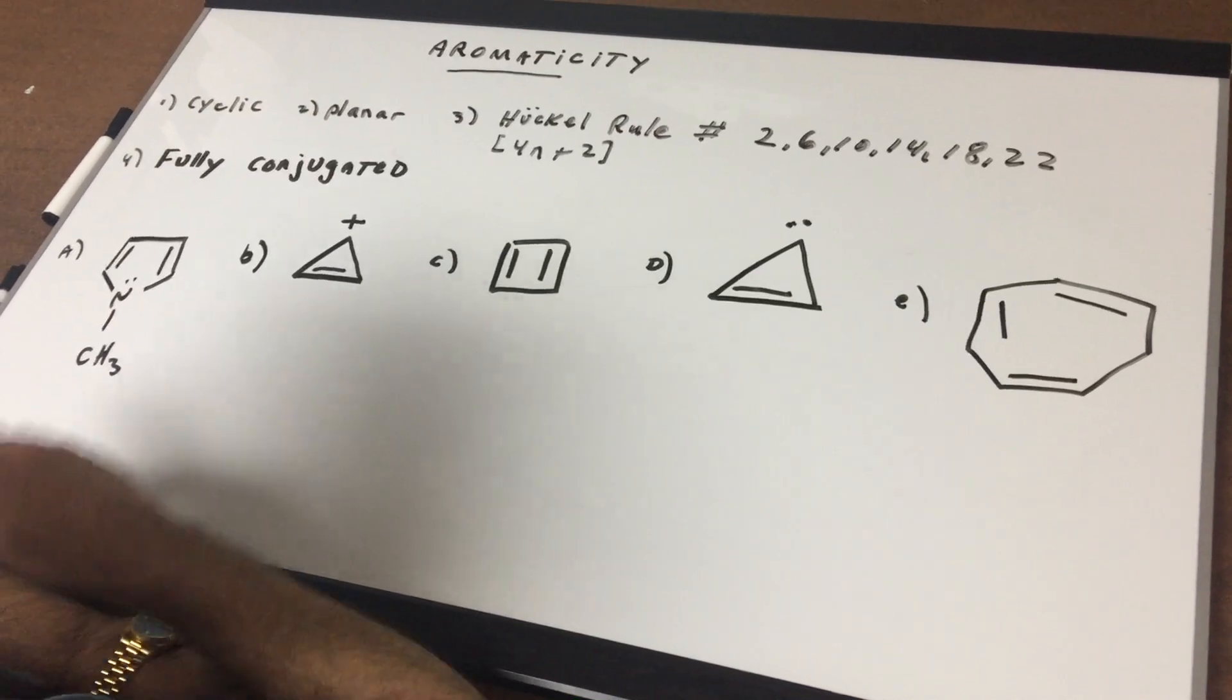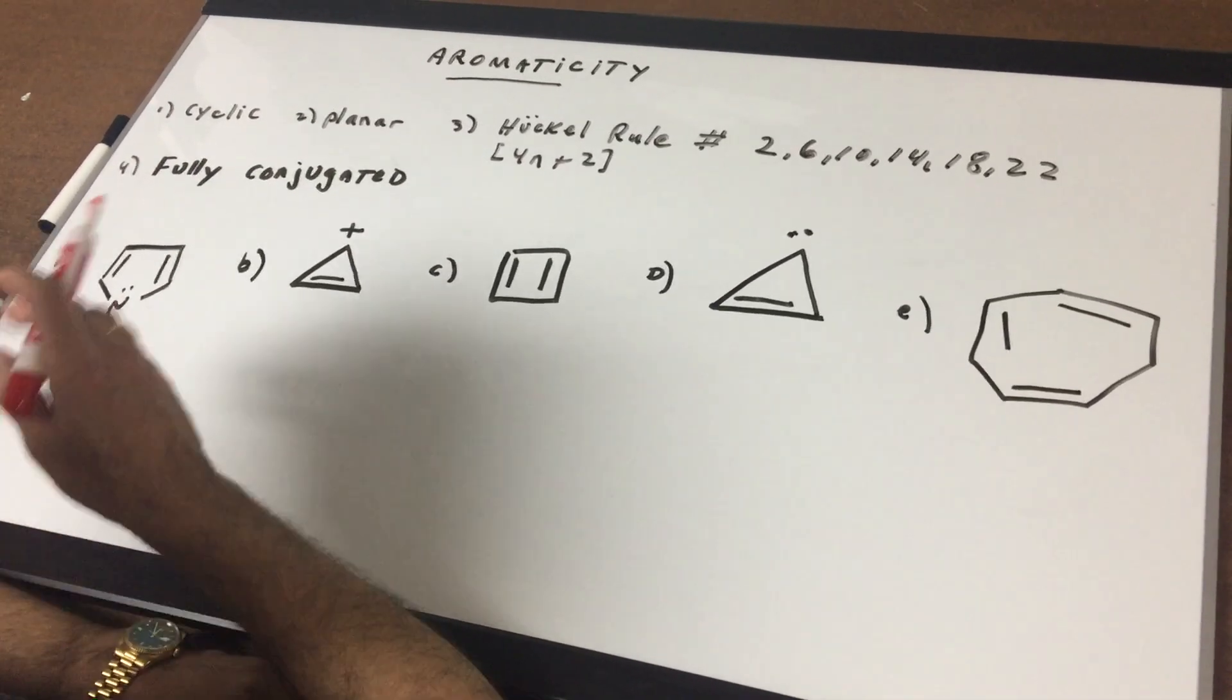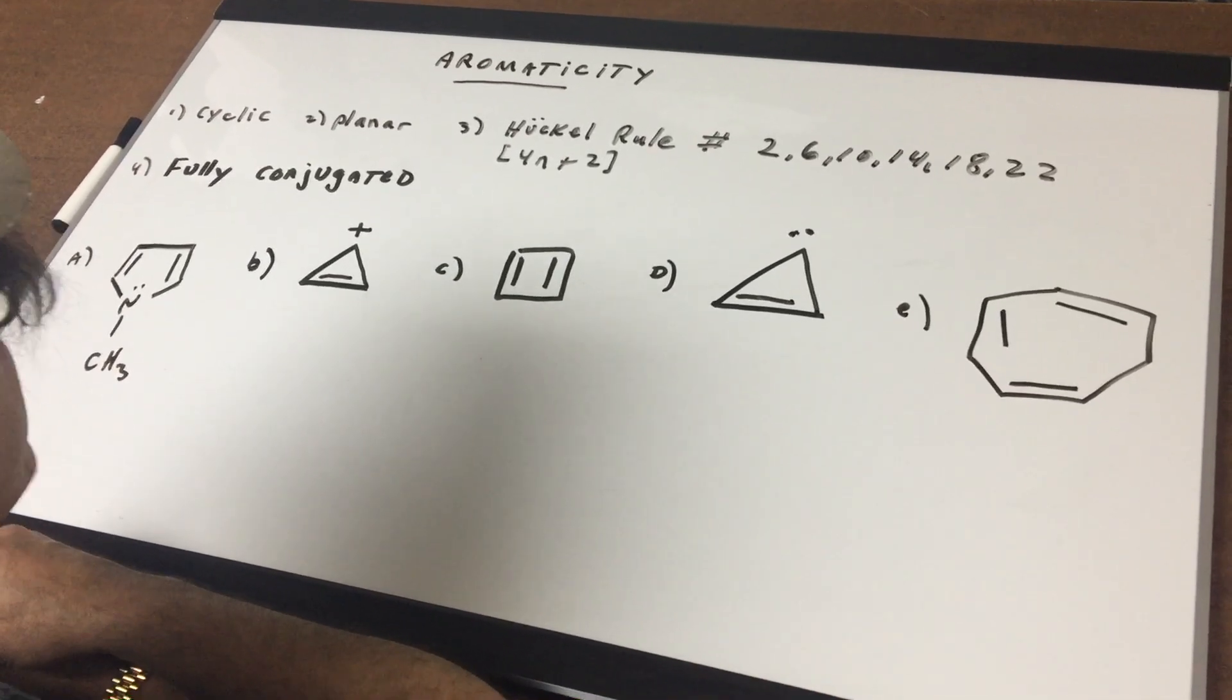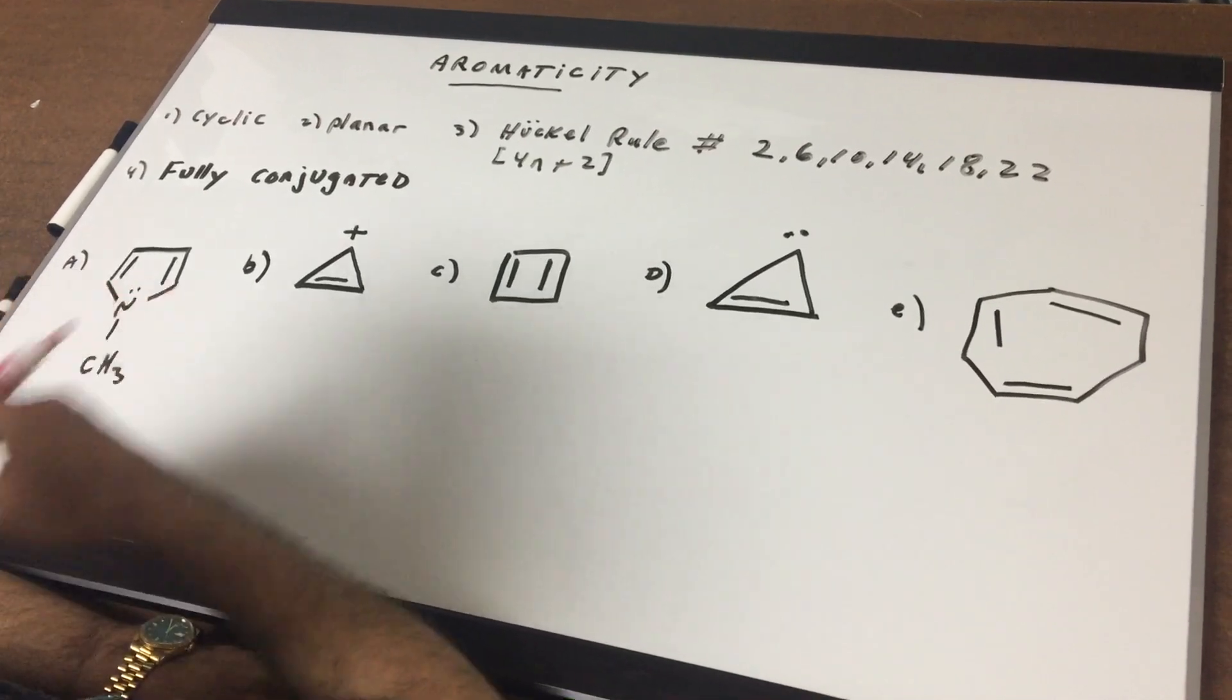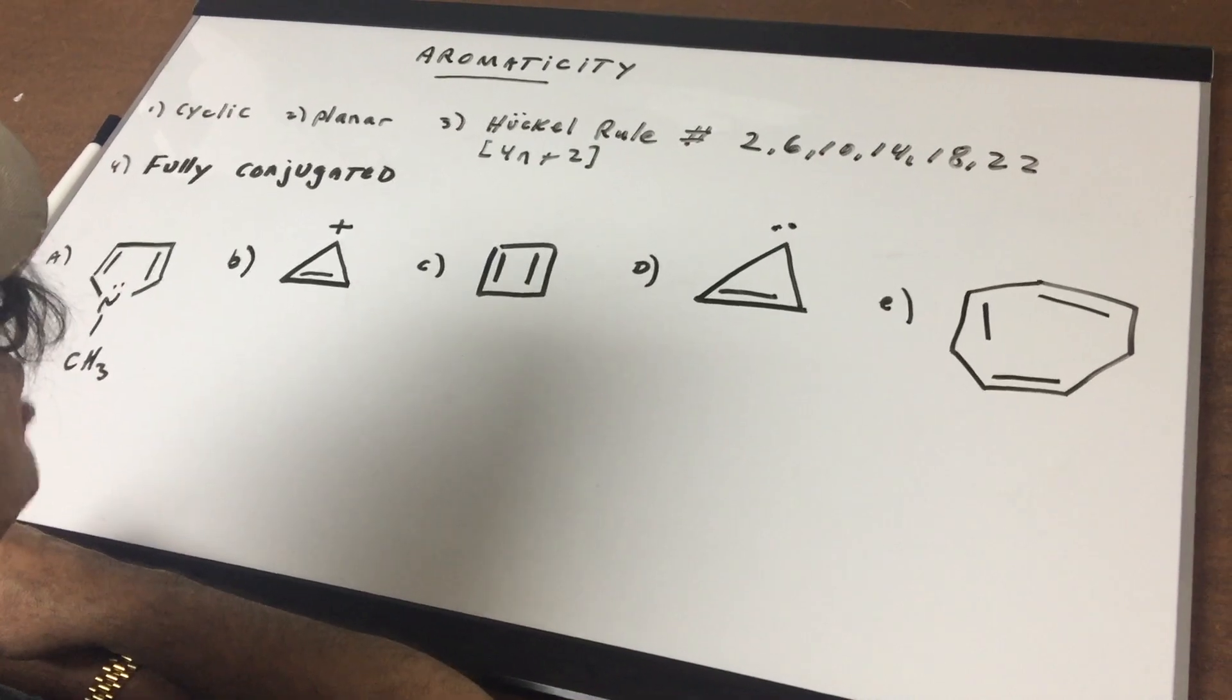The second thing is the molecule must be planar, must be flat. A good friend of mine, Professor Emeritus of Princeton University said it the best. Benzene is flat as a pancake. So we want to make sure something is planar or damn close to planar.